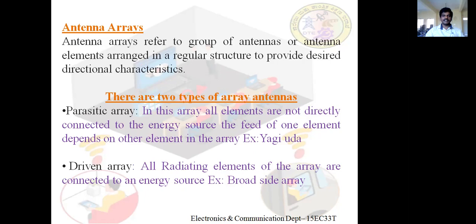There are two types of antenna arrays: parasitic array and driven array. An array is a group of antennas — it could be 2, 3, 4, 5, or any number depending on our requirement. If all the radiating elements are supplied with an energy source, we have a driven array. A driven array is an antenna array in which all the elements are connected to an energy source. Examples of driven arrays include the broadside array and the endfire array.